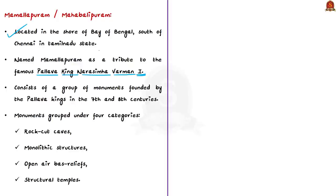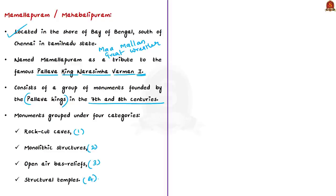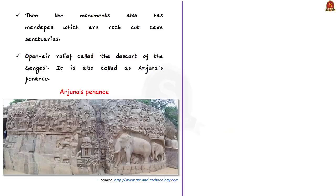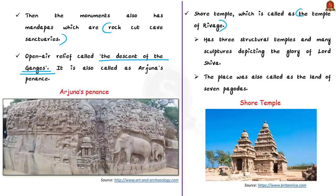The name Mamalapuram was given as a tribute to the famous Pallava king Narasimhavarman I, called 'Ma Mallan' meaning Great Wrestler. Mamalapuram has great significance for India's cultural heritage, consisting of a group of monuments founded by the Pallava kings in the 7th and 8th centuries. The monuments are grouped under four categories: rock caves, monolithic structures, open-air bas-reliefs, and structural temples. Notable attractions include five rock rathas or chariots in the southern end, mandapas or rock-cut cave sanctuaries, the famous open-air relief called the Descent of the Ganges (also called Arjuna's Penance), and the Shore Temple also called the Temple of Rivej with sculptures depicting Lord Shiva.